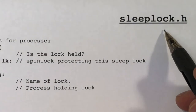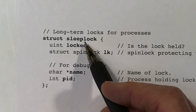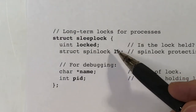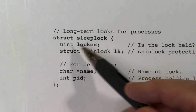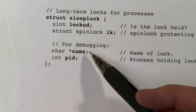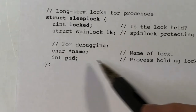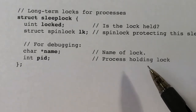Now let's take a look at the code. The sleeplock.h file contains the structure used to represent a sleep lock and nothing more. That structure contains the fields lk, locked, name, and pid. lk is a spin lock. locked is the boolean that's true if and only if the lock is held. The name string and pid — the process ID currently holding the lock, if any — are used for debugging.